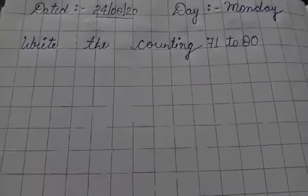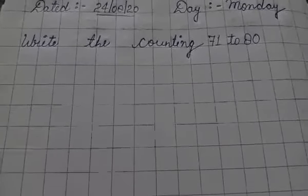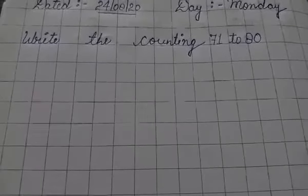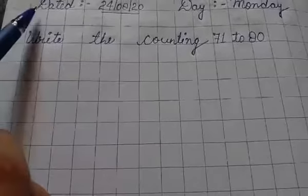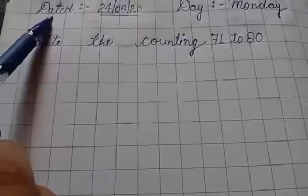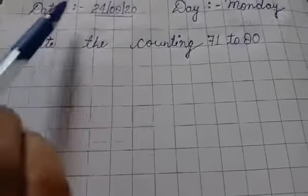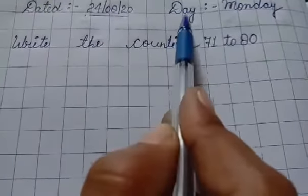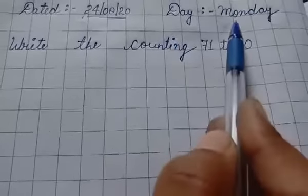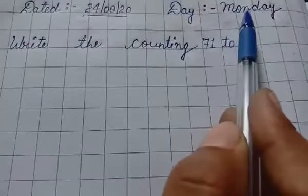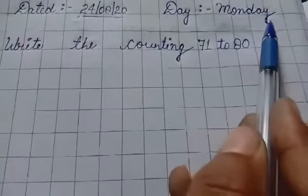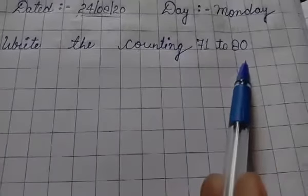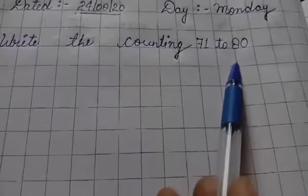Hello students, welcome to Blooming Rose Academy. We are going to study class UKG subject Math. Date 24 August 2020, Day Monday. Write the counting 71 to 80.